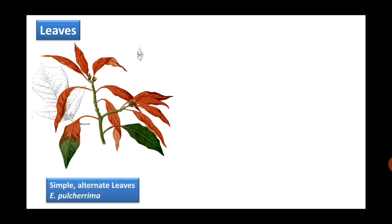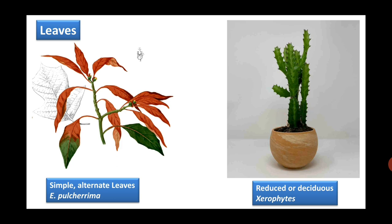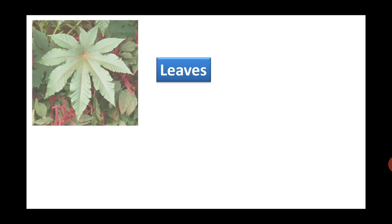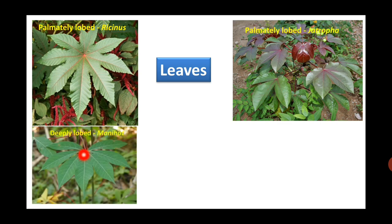Leaves are mostly simple, for example Euphorbia pulcherrima. Phyllotaxy is alternate, meaning one node has one leaf. Leaves are stiff and stipulate, usually reduced or deciduous in several xerophytic Euphorbia species. Sometimes palmately lobed, for example Ricinus and Jatropha. More deeply lobed leaves are found in Manihot, which is commonly called tapioca — sago is extracted from the tuberous roots of Manihot.